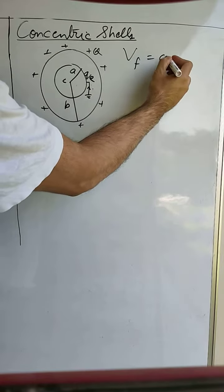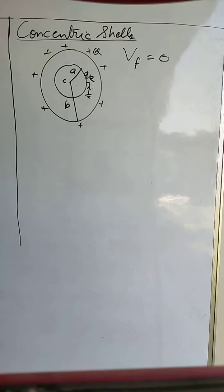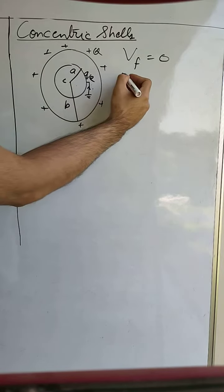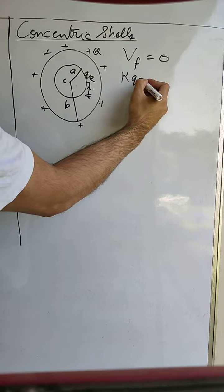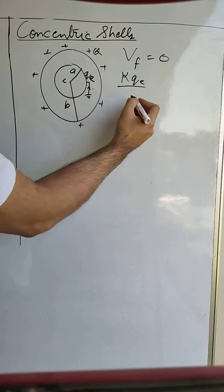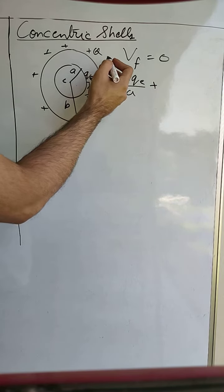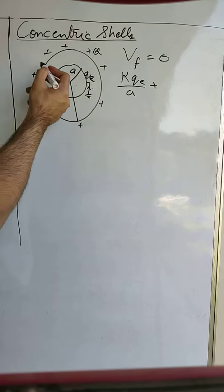So the final potential of the inner shell should be equal to 0. Now the potential due to its own charge will be equal to KQE/A, plus potential due to the outer surface. Now for this outer shell.